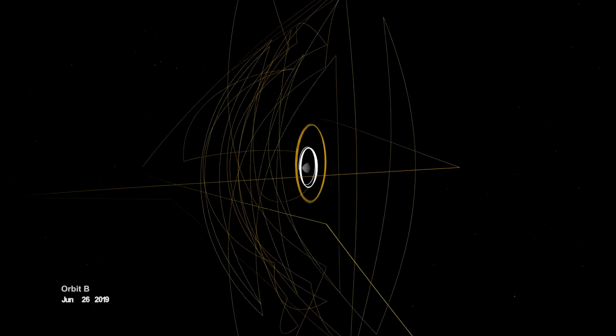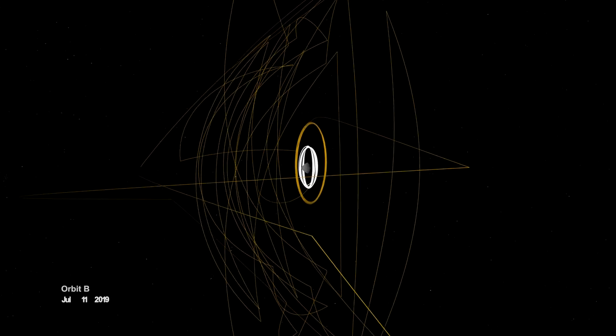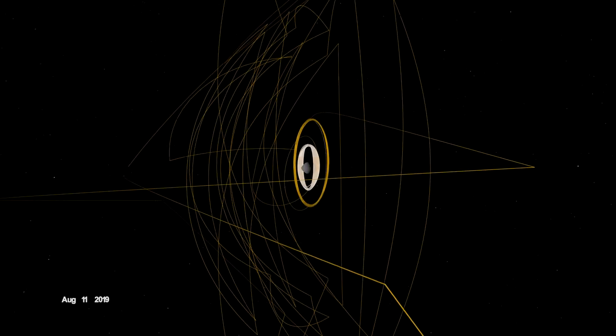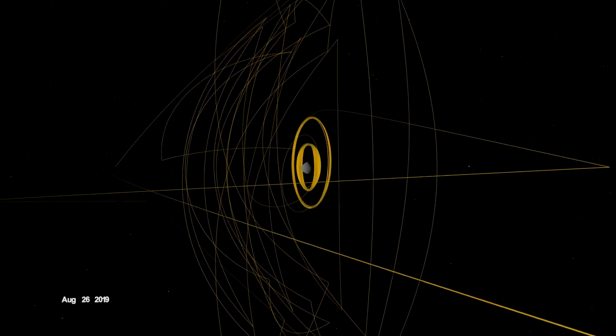On June 12, the spacecraft entered a new orbit at an altitude of just 680 meters, setting another record and establishing a home orbit for the remainder of the mission.